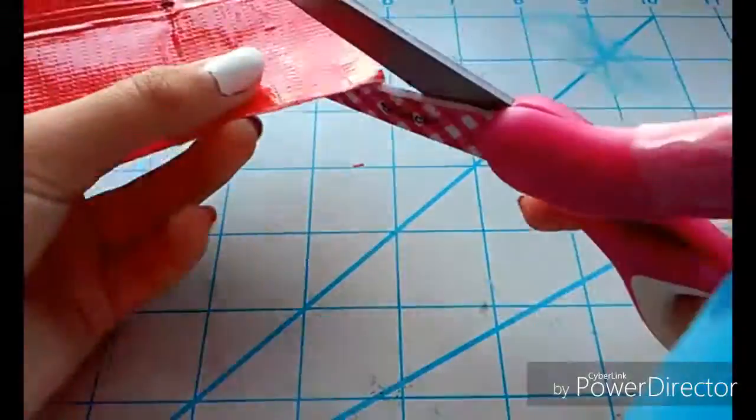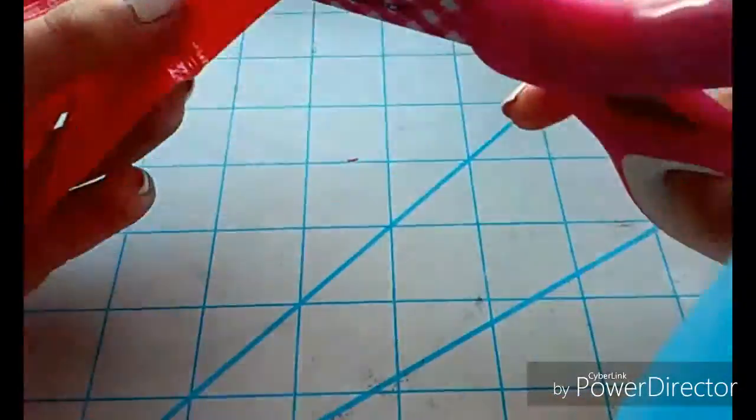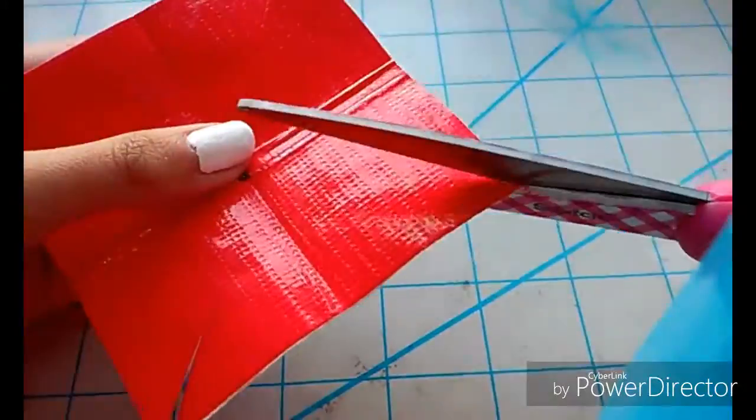So then at every corner you're just going to cut little slits going about halfway through down to each square.